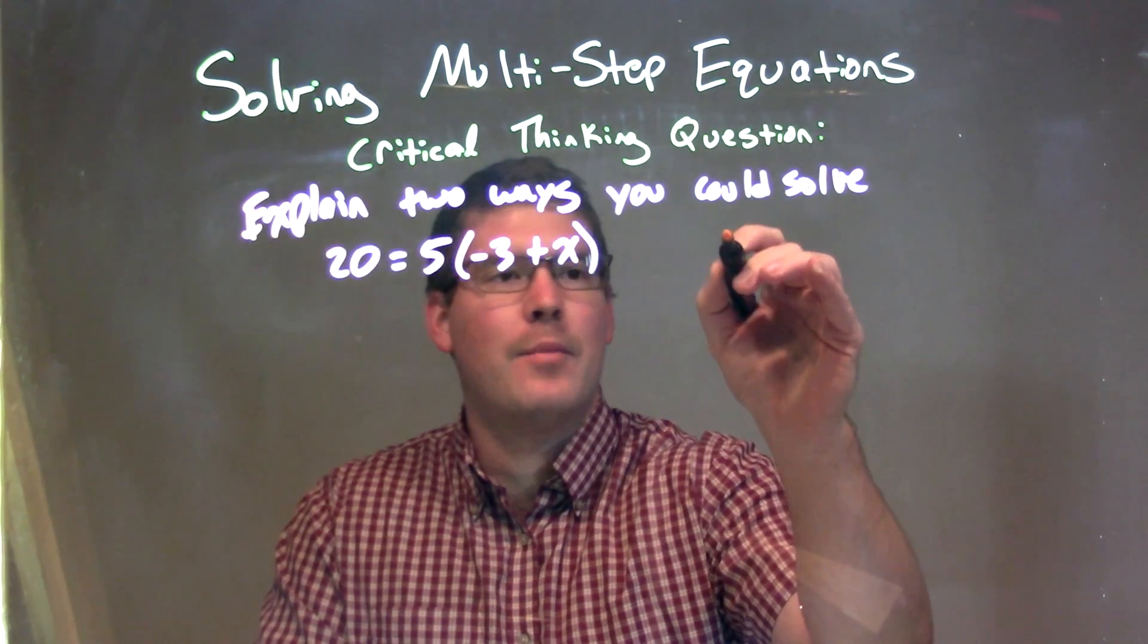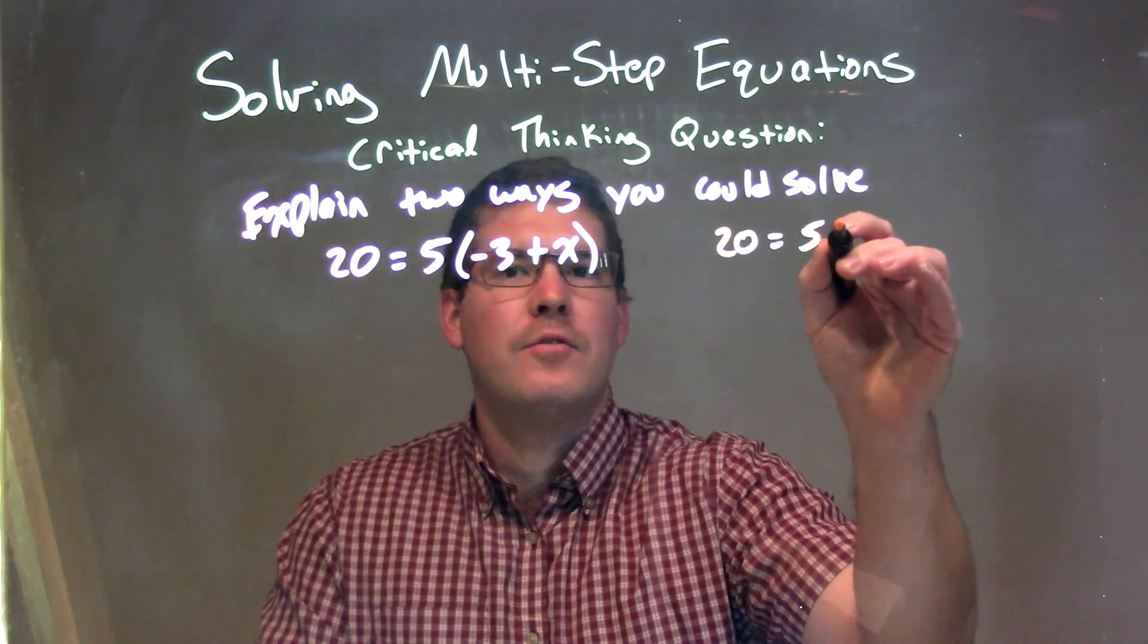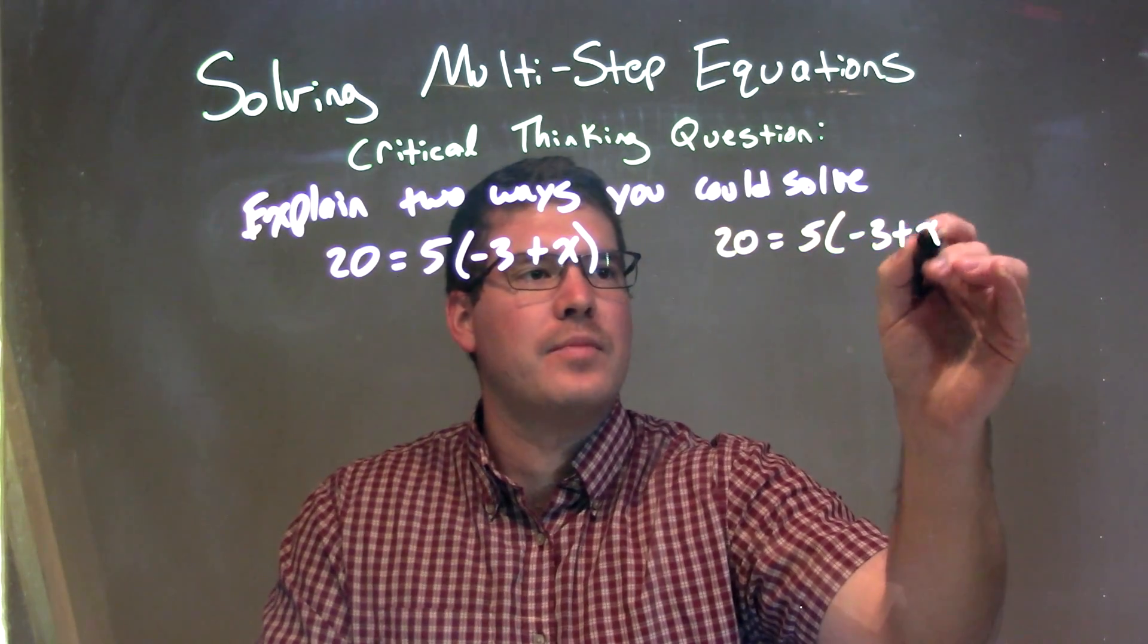I'm going to write the problem a second time right here. 20 = 5(-3 + x).